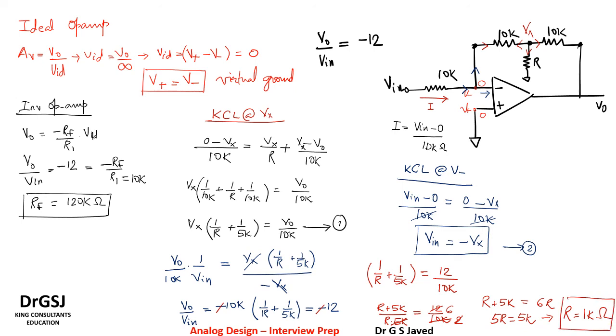5R equal to 5K, which implies R equal to 1 kilo ohm. So the value of R is 1 kilo ohm. This way we were able to generate two equations for the two variables and connecting the two variables. Thank you.